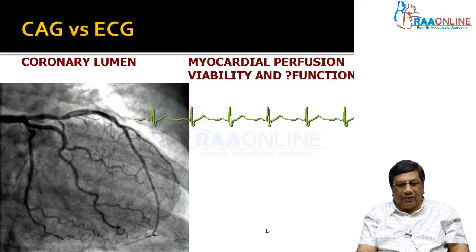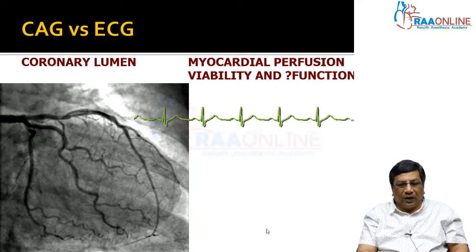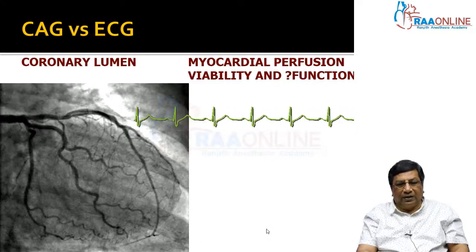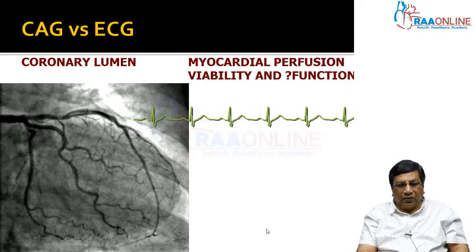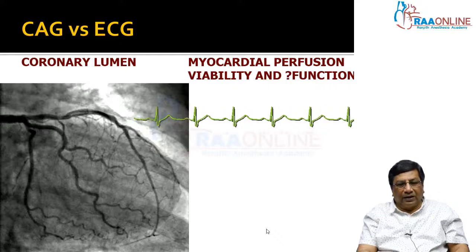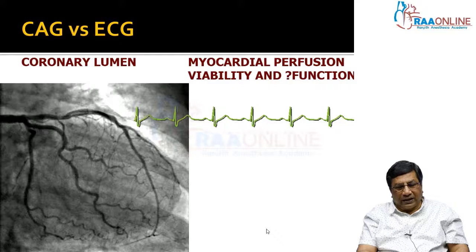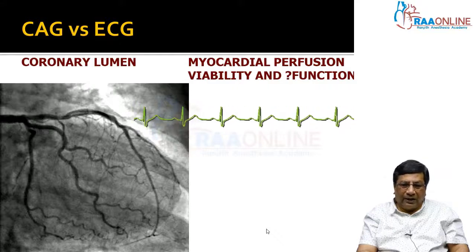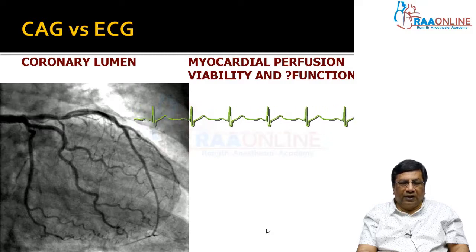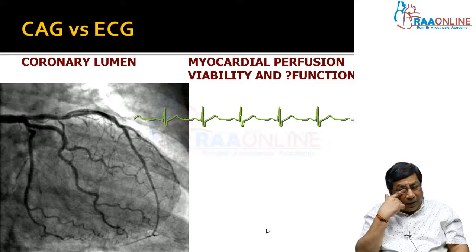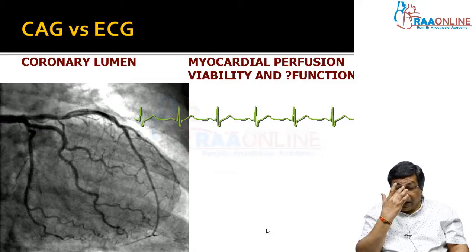We already discussed about the importance of the electrocardiogram over and above a coronary angiogram, because coronary angiogram is a luminogram which tells you the big epicardial coronary arteries are normal. But the electrocardiogram gives you the ultimate myocardial perfusion, as well as information about viability and sometimes function. So the electrocardiogram, as far as the myocardial cell is concerned, gives you more information than coronary angiogram.